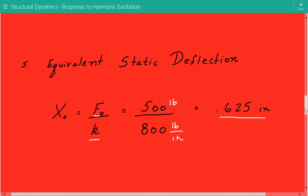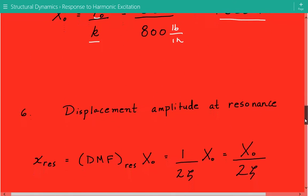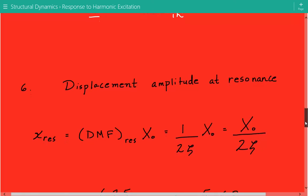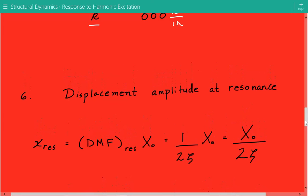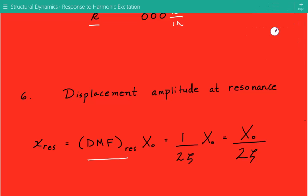Now that we've calculated the equivalent static deflection, we can calculate the displacement amplitude at resonance and also the maximum displacement amplitude. First, let's consider the displacement amplitude at resonance, which equals the dynamic magnification factor at resonance times the equivalent static deflection.